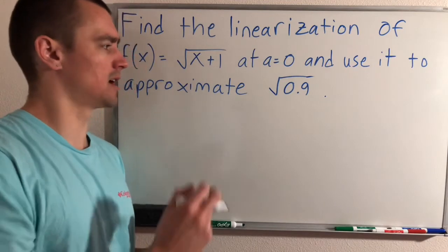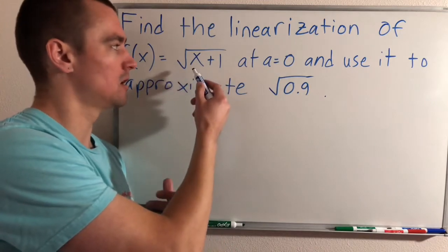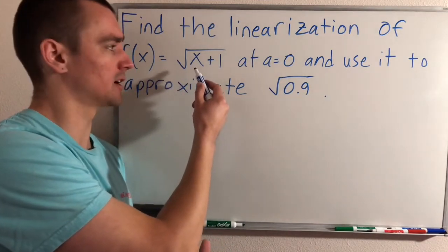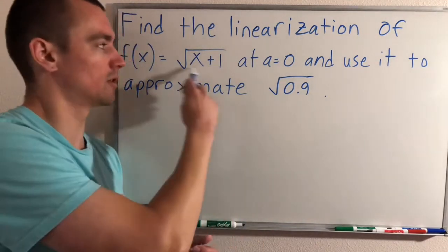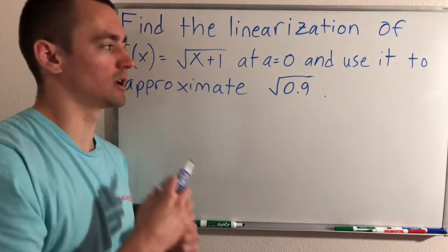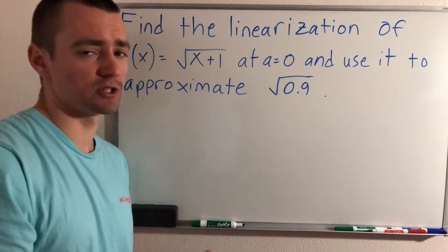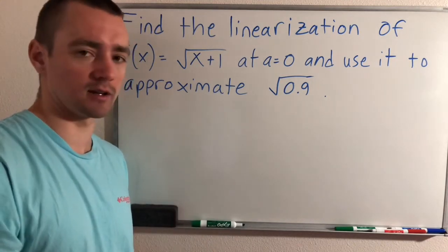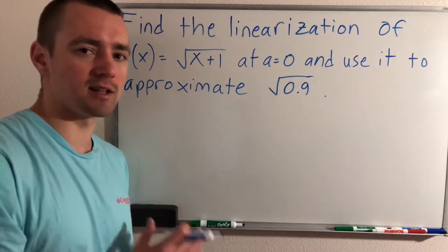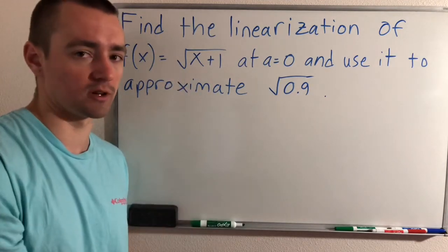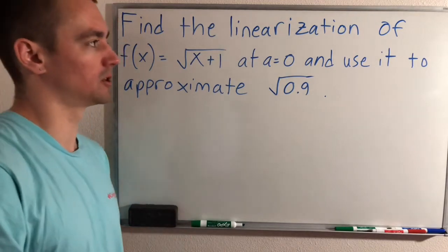The idea is that the square root of 0.9 lies on this function f(x). So we're going to use the linear approximation, which should be pretty close to √(x+1) around this point, and use that to come up with a value that's pretty close to √0.9. It is just an approximation — it's not going to give us the exact value. But dealing with a linear function is a lot easier than dealing with a square root function, so linearization is really useful for that.